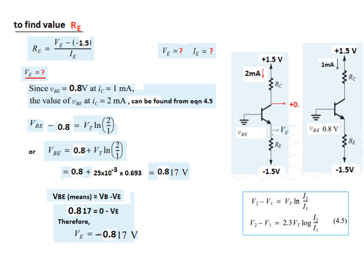And now, VBE means actually that VB minus VE. So, VBE we can write VB minus VE. VBE is 0.817. VB is 0 from here, it is grounded. Minus VE, so from here, VE comes to be negative 0.817 volt. So, we have found the first part.